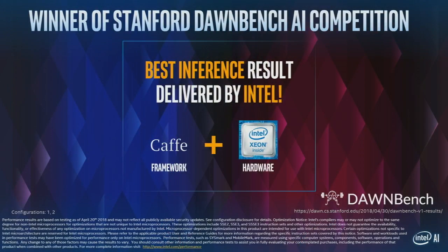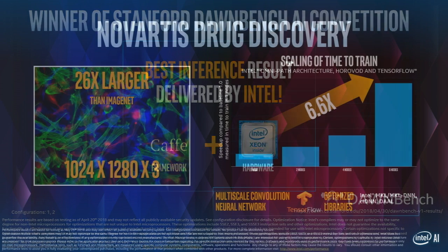All this optimization work that we are doing is showing great results. Here's an example: at the Stanford Dawnbench competition, the best inference results were from Intel. This was a combination of the optimized framework as well as the hardware, the Xeon processor — both low latency and low cost.